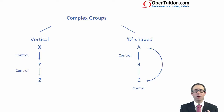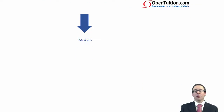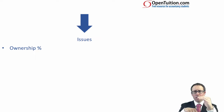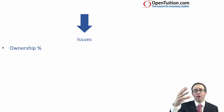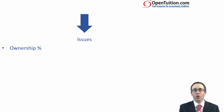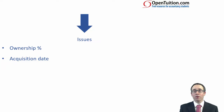Focusing on the group aspects of complex groups, the issues we need to consider are: first, ownership — we know how much P owns in S and how much S owns in SS, but indirectly how much does P own in the sub-subsidiary? When preparing group accounts for the parent shareholders, we need to know how much they indirectly own in the sub-sub, because that's important when recording our share of post-acquisition profit in the sub-subsidiary. So we need to look at our percentage ownership.